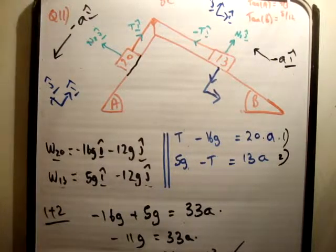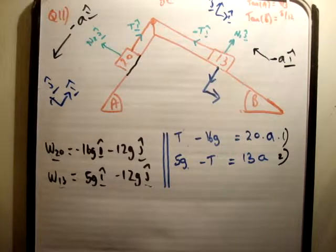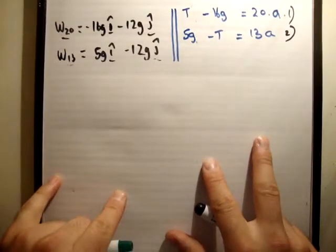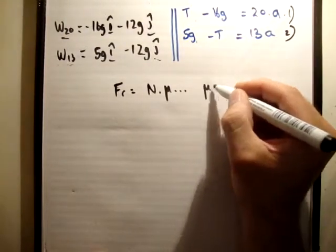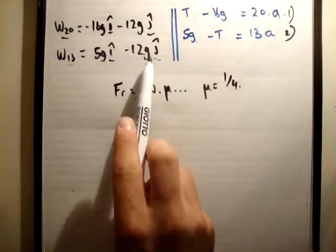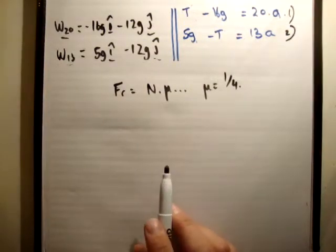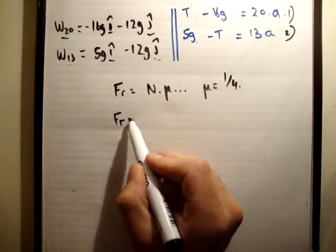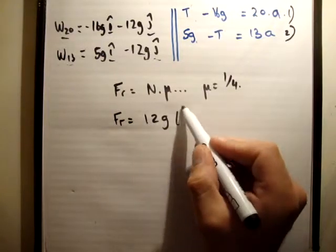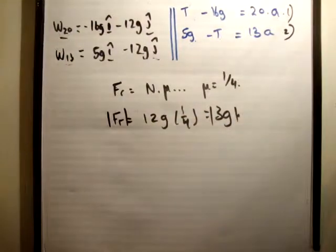So the next part of the question says we are to work out all of that again, but this time with a coefficient of friction of 1 over 4. So we know that the frictional force is equal to the normal force times the coefficient of friction, where mu in this case is equal to 1 quarter. Now, if you look, the j hat component of the weight for both of these is equal to 12. So they're going to have the same normal force. So in this case, fr is going to be 12g times 1 quarter is equal to 3g. So the magnitude of the friction force both times is equal to 3g.